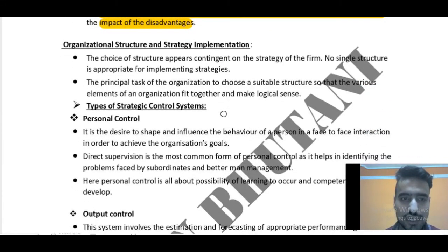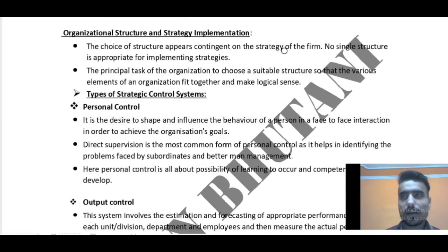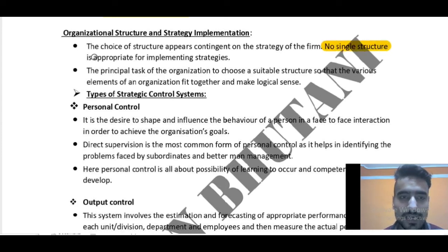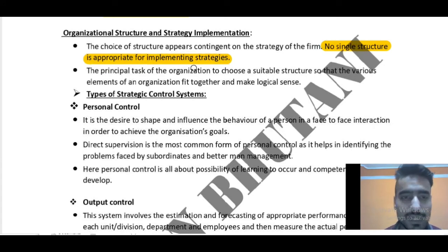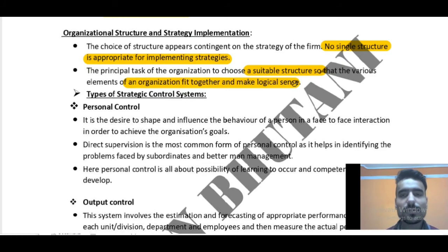Organizational structure and strategy implementation: the choice of structure appears contingent on the strategy of the firm — structure depends on the strategy of the firm. We cannot make a structure without a strategy, as we have studied in the McKinsey 7S framework. No single structure is appropriate for implementing all strategies. The principle task of the organization is to choose a suitable structure so that the various elements of the organization fit together and make logical sense.